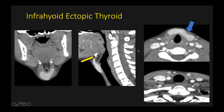The vast majority, over 90 percent of ectopic thyroid, is at the foramen cecum at the base of the tongue, but occasionally you may see infrahyoid ectopic thyroid. It is almost there but could not quite make it, so it sits in the infrahyoid neck.